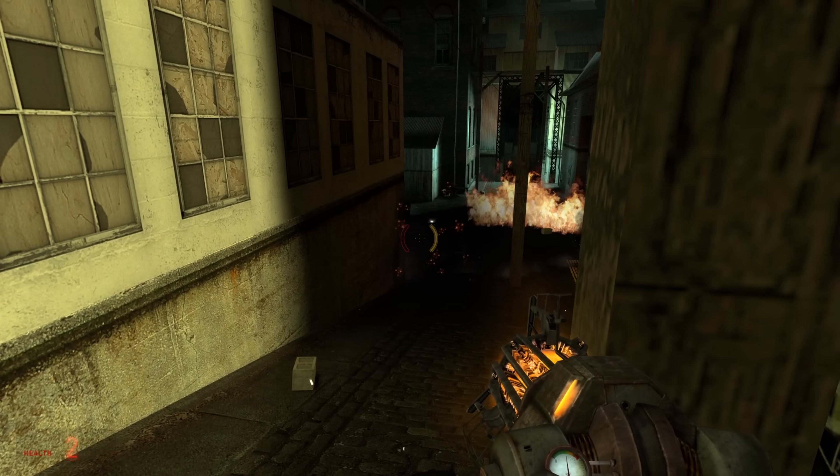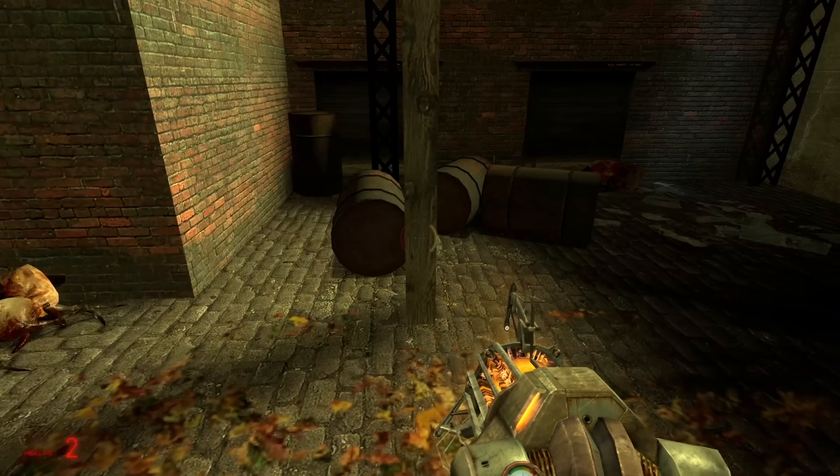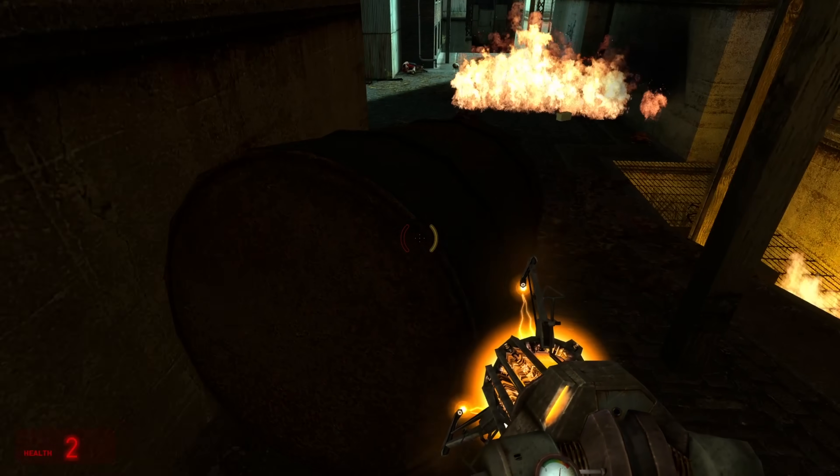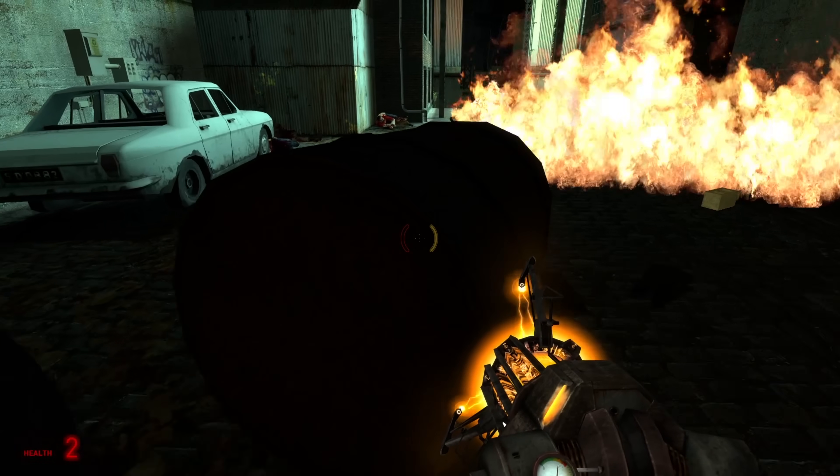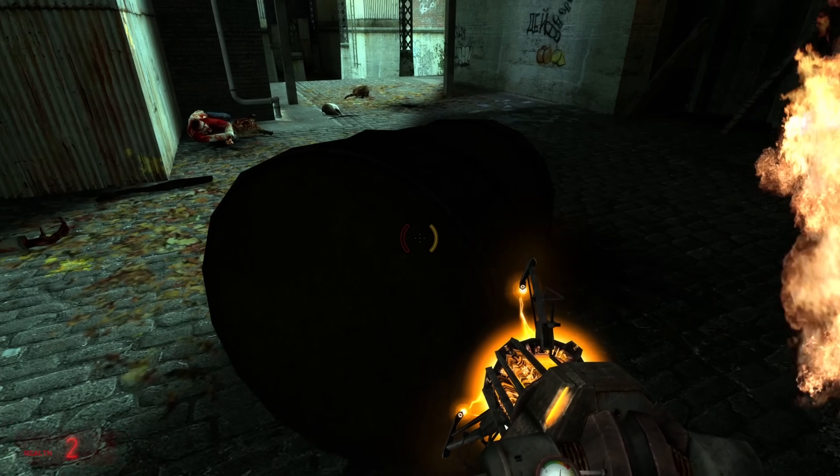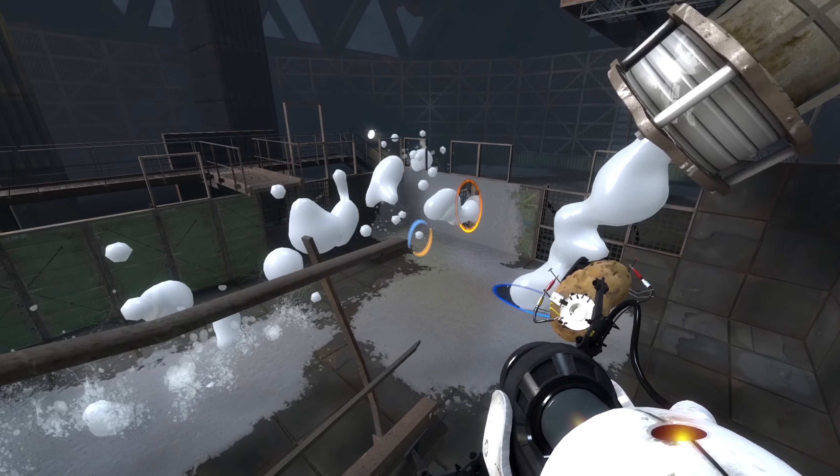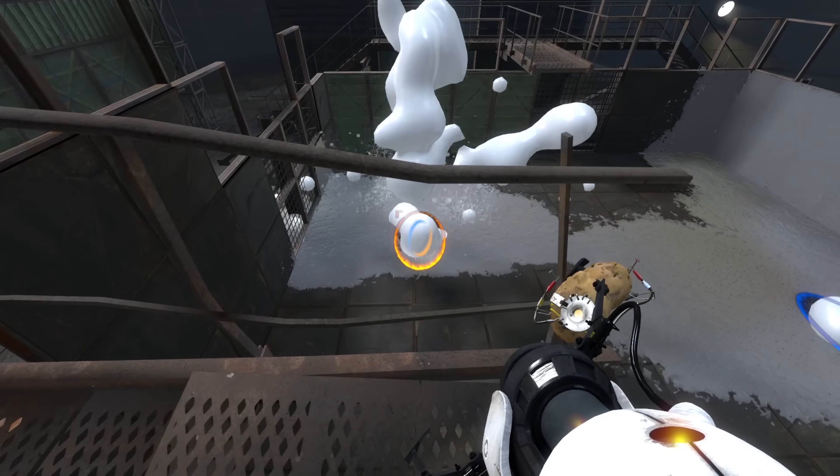The gravity gun's official name is the zero point energy field manipulator. Naming this weapon the gravity gun is a little misleading, considering the forces in effect are not gravitational forces. Like with the quantum tunneling device from Aperture Labs, something quantum mechanical may be going on here.